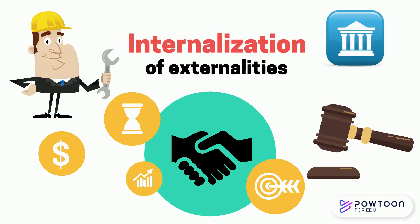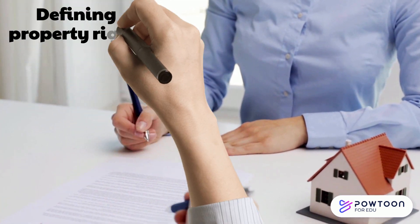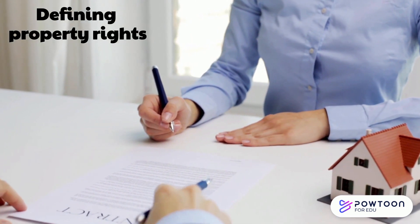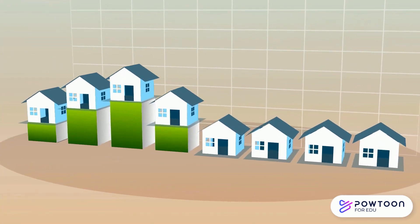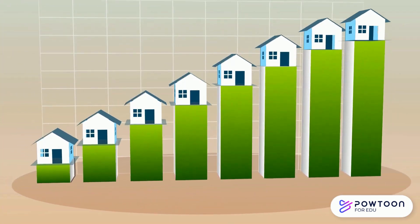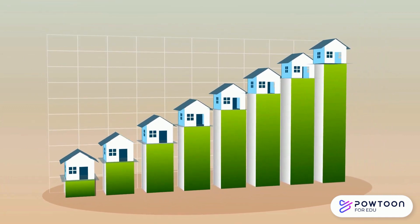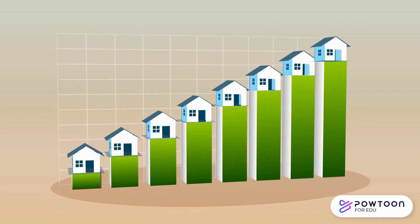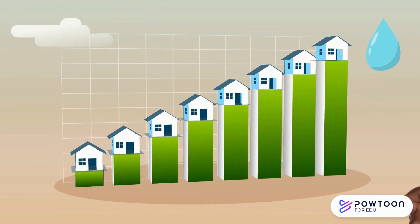Generally, the internalization is achieved through government intervention. Ideally, defining property rights will solve the adverse effect of externalities. A strict definition of property rights can limit the influence of economic activities on unrelated parties. However, it is not always a viable option, since the ownership of particular things such as air or water cannot be clearly assigned to a particular agent.